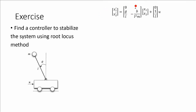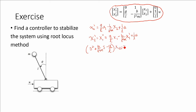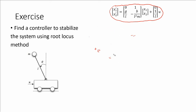Now let's find a controller to stabilize our inverted pendulum system using the root locus method. Remember that we got the linearization of the system at the equilibrium point of the upward position as this state space system. We can then compute the transfer function by using the Laplace transform to obtain p, the transfer function of the plant.